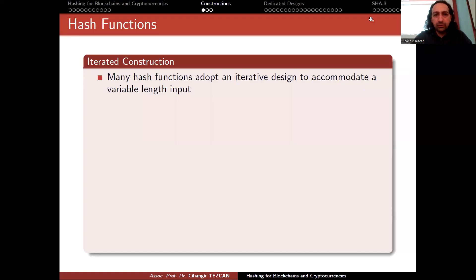Alright, so we continue with constructions. There isn't much construction methods for designing hash functions. The most famous ones are Merkle-Damgård constructions, but nowadays we have sponge function constructions. SHA-2 and all of the previous ones are Merkle-Damgård, but SHA-3 and some of the recent designs are sponge function constructions.